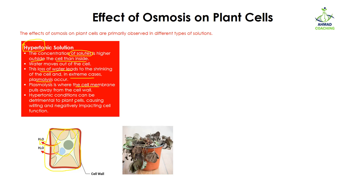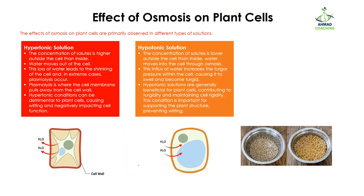The hypertonic condition can be detrimental to plant cells and can cause wilting, negatively impacting cell functions. For example, during summer when sunlight is high and you place your plant outside, the water from the soil starts to evaporate. As water evaporates, the amount of solute increases and the water potential decreases in comparison to the water inside the leaves. So water moves from the leaves into the soil, leading to the wilting of the leaves. That is why during summer you observe the wilting of plants.